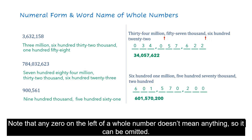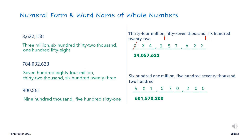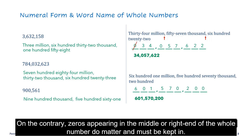Note that any zero on the left of a whole number doesn't mean anything, so it can be omitted. On the contrary, zeros appearing in the middle or at the right end of a whole number do matter and must be kept in.